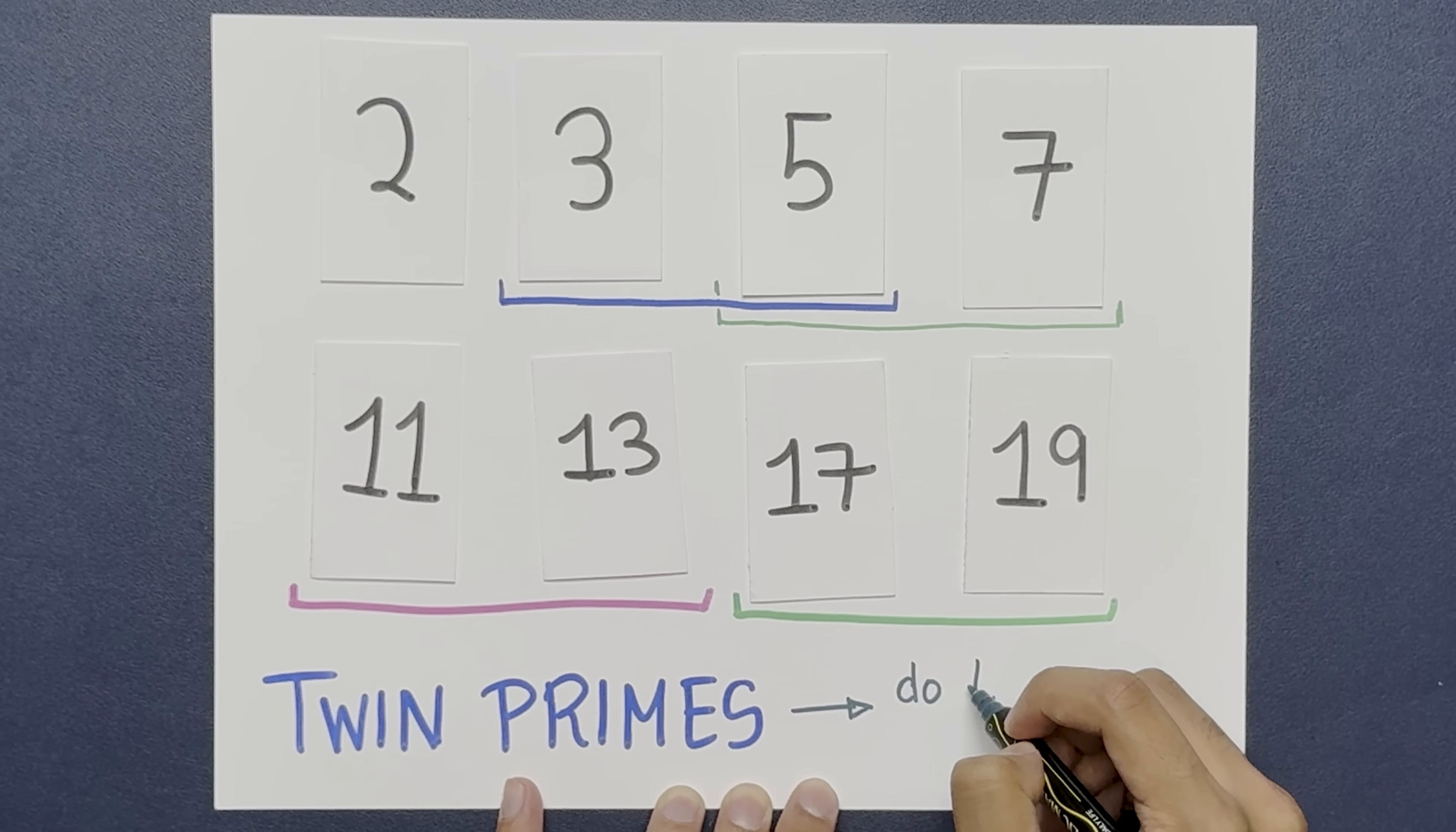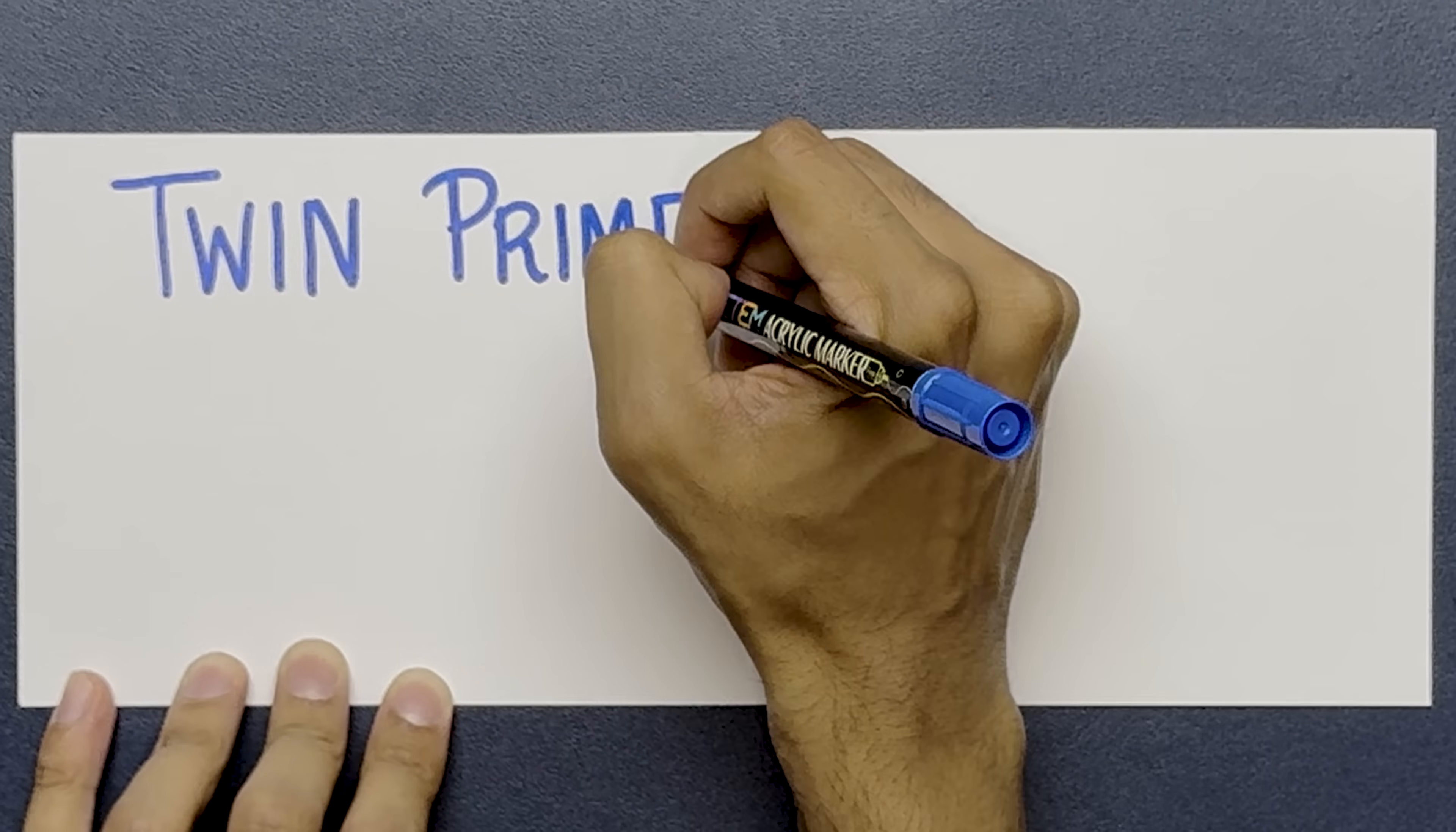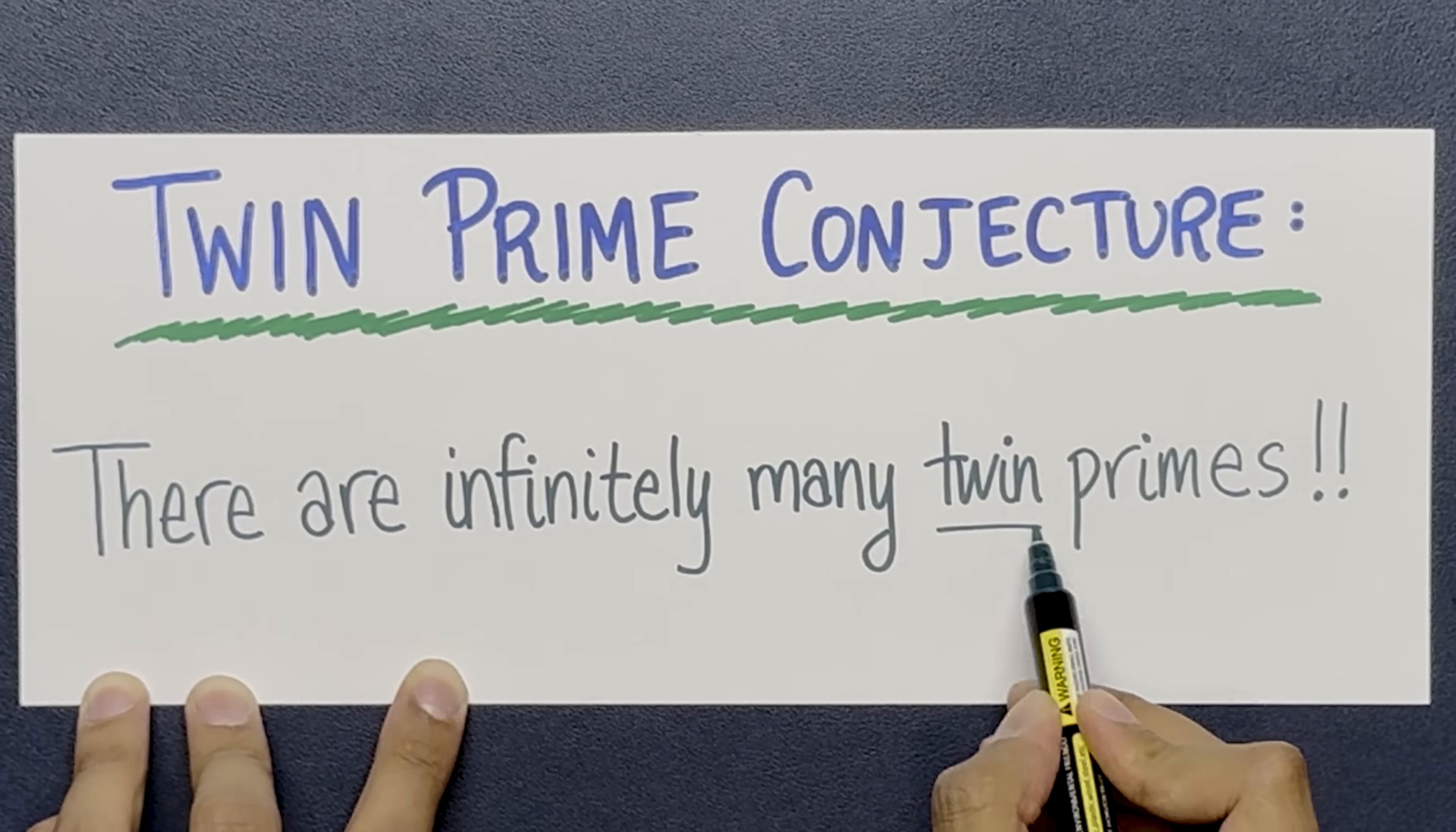And here's the big mystery. Do these pairs continue on forever? Or will we eventually find the last one? The twin prime conjecture says there are infinitely many twin primes.